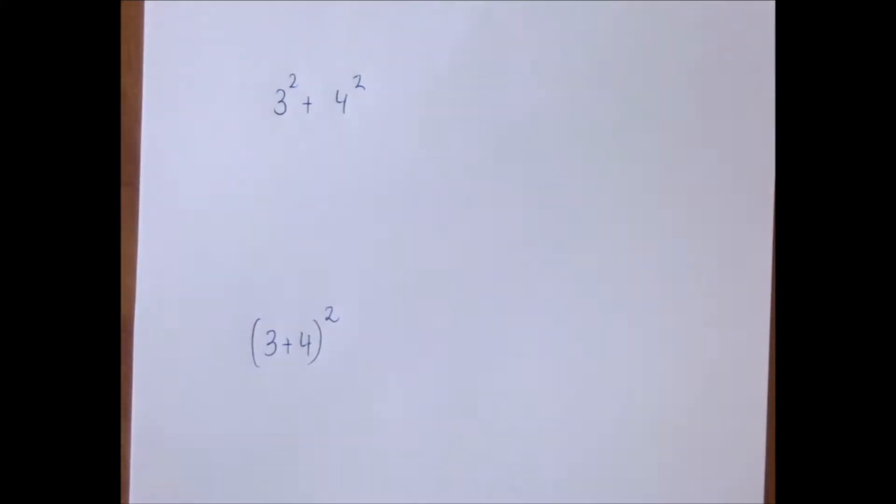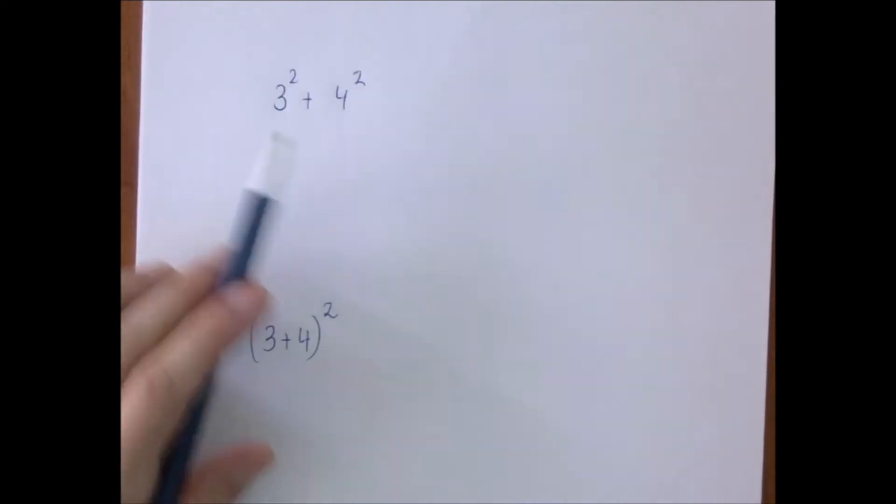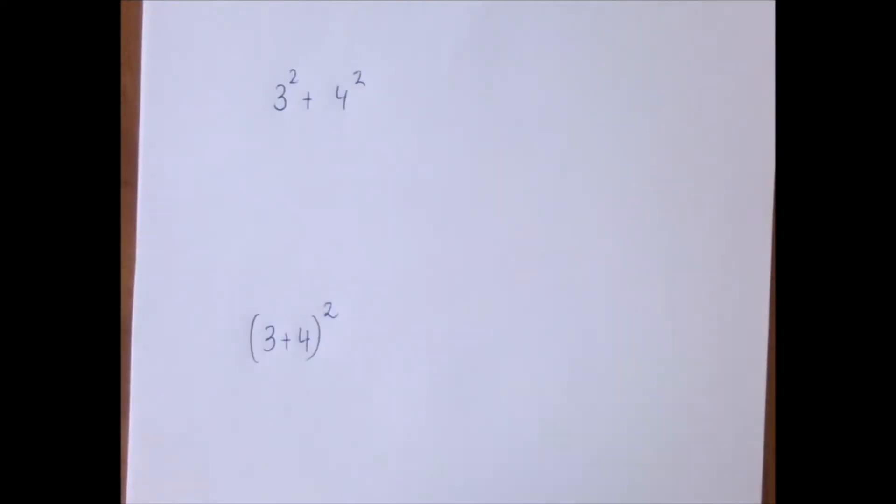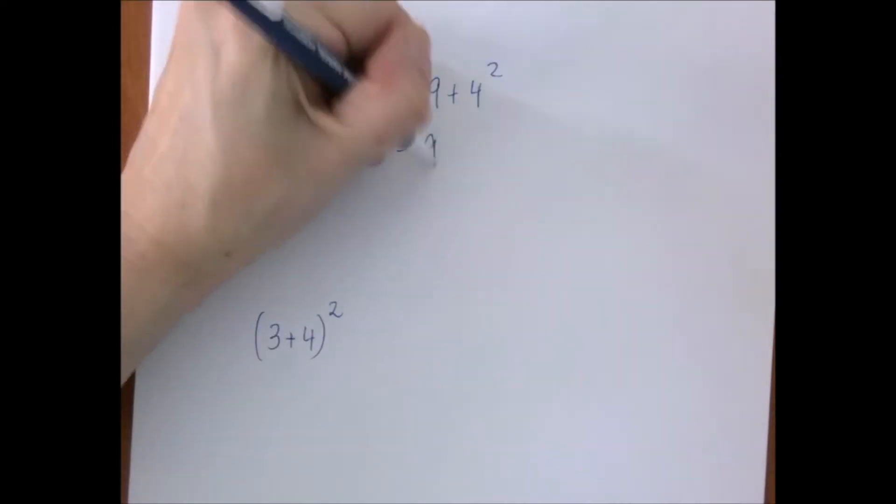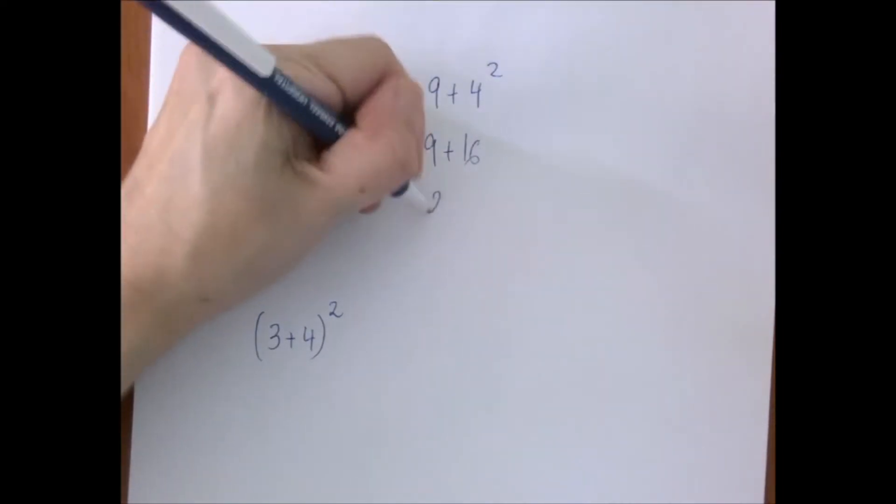If you look at them, the first one has squaring and addition, but no parentheses. Between addition and exponentiation, exponentiation is stronger, so left to right, we have 9 plus 4 squared. 4 squared is 16, so we have 9 plus 16, and that's 25.